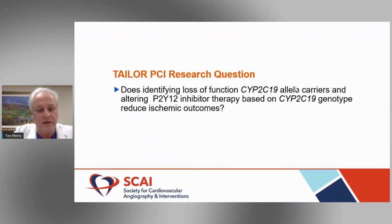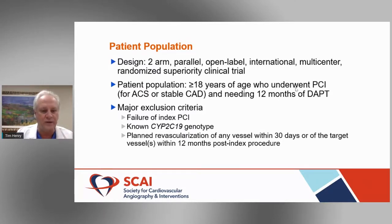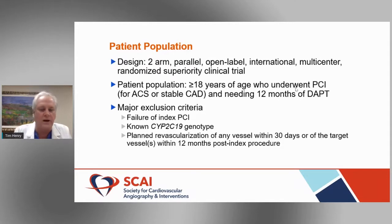This led to the TAILOR-PCI trial — easier and less expensive genetic testing is now available. The trial identified patients with loss of function of the CYP2C19 allele and asked whether changing P2Y12 inhibition based on genotype decreases outcomes. It was a two-arm, parallel, open-label, international, multicenter trial randomized to test superiority. Broadly, any patient over 18 with any ACS or stable coronary disease getting 12 months of DAPT was eligible; exclusions included prior genotyping or planned staged revascularization.